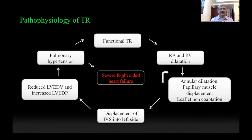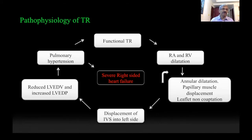Regarding pathophysiology, functional TR leads to RA and RV dilatation, which in turn causes displacement of the papillary muscles, resulting in further non-coaptation of the leaflets and more tricuspid regurgitation. In the end stages, the enlarged right ventricle displaces the interventricular septum into the left ventricle, reducing left ventricular end-diastolic volume. This in turn increases left ventricular end-diastolic pressure, which is transmitted back into the pulmonary system and can aggravate existing pulmonary hypertension — a vicious cycle that ultimately leads to the death of the patient.